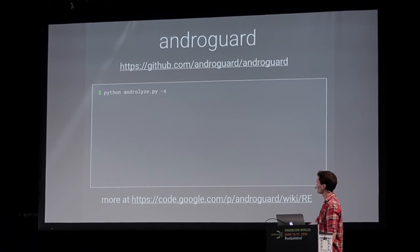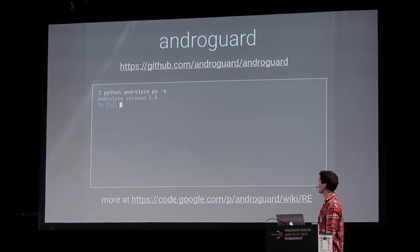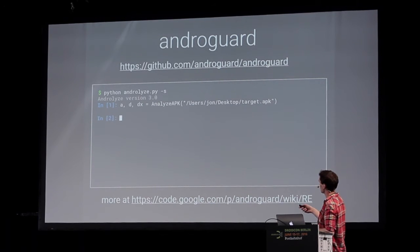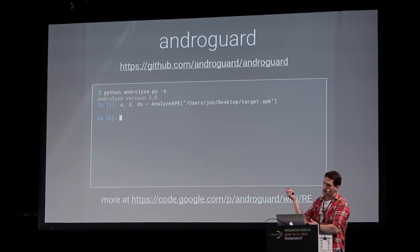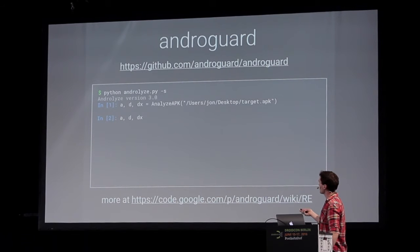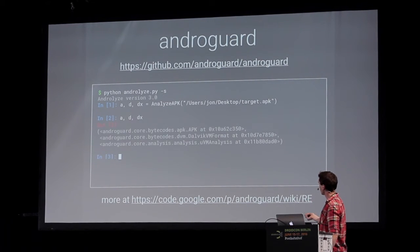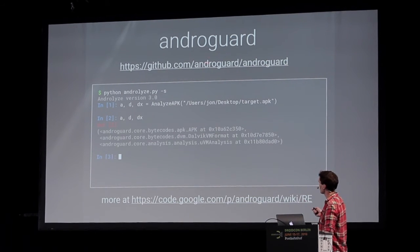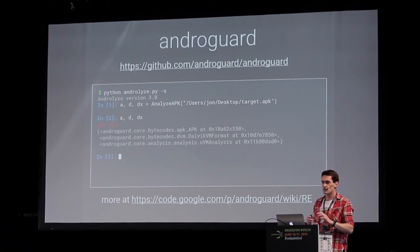You use it something like this: run androlyze and it starts an interactive shell with tab completion. You run something like this to analyze the APK you give it - you can also pass in dex files or other formats. This produces three result objects: one representing the APK itself, one representing the Dalvik dex contents, and one representing a metadata object with a bunch of interesting stuff. For instance, I could take the first one and ask what's the main activity on this APK, and it tells me.